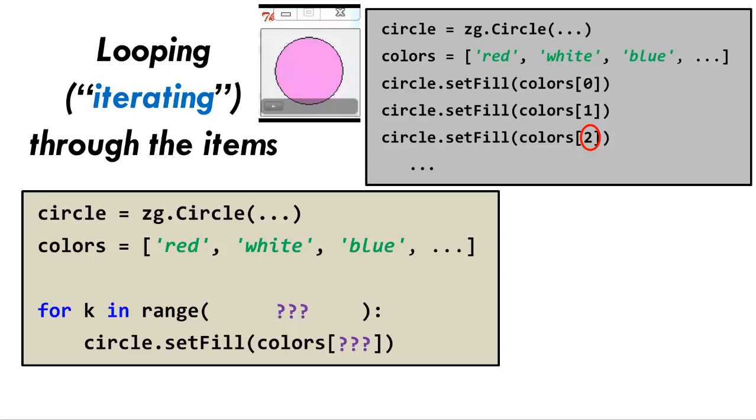Decide for yourself. What variable do we already have in the code that is going 0, 1, 2, etc. as we iterate through the loop? Pause the video now and decide for yourself.